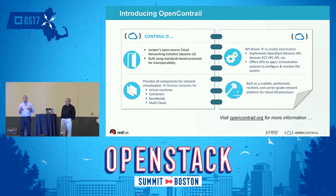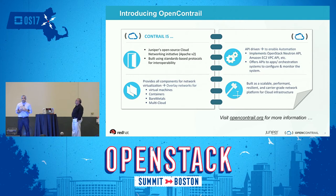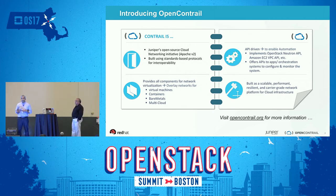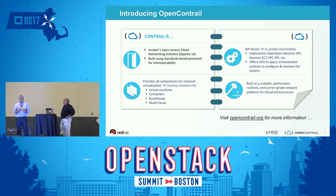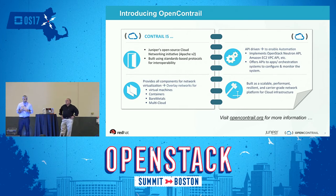OpenContrail is not limited to providing connectivity for VMs in OpenStack or vCenter environments. We are also extending capabilities to the container world — we have Kubernetes-based integration, Mesos, OpenShift, and so on. We recently published a blog on our upcoming release and its capabilities, so I encourage you to go to opencontrail.org and juniper.net to read the latest.